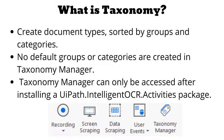In Electricity Bill, it can be the electricity board number or your meter number. In Gas Bill, it can be your gas number. In Water Bill, it can be your water pipeline number. So there can be different data we want to extract. Basically, Taxonomy is created using the Taxonomy Manager.